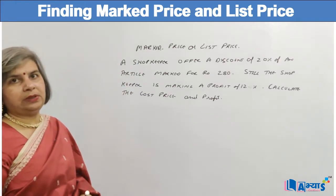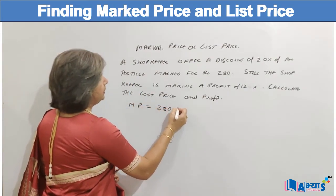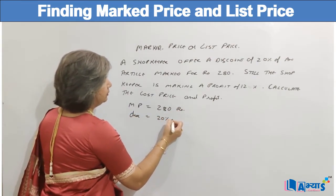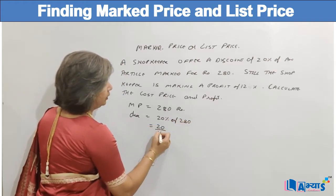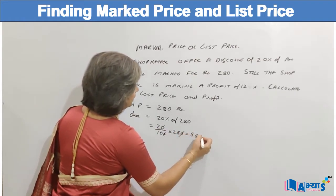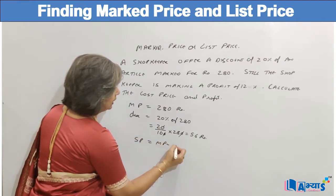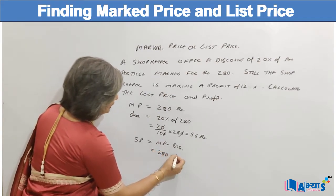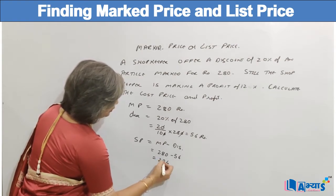This question will be done in two parts. In the first part, the mark price is Rs. 280. The discount is 20% of Rs. 280, that means 20/100 × 280, which equals Rs. 56. So the selling price is mark price minus discount, which is Rs. 280 minus Rs. 56, giving us Rs. 224.